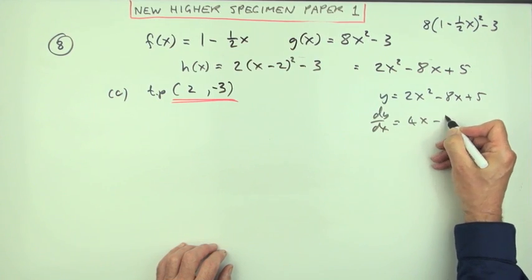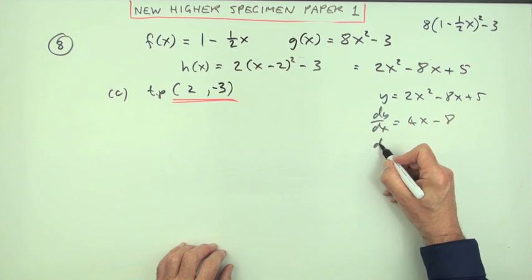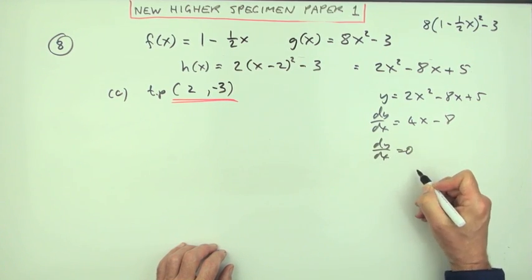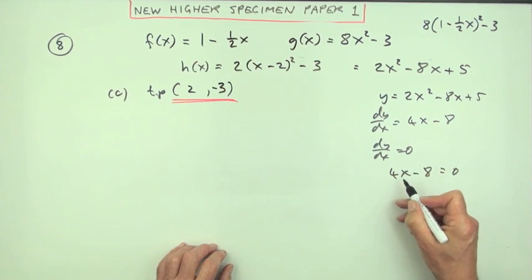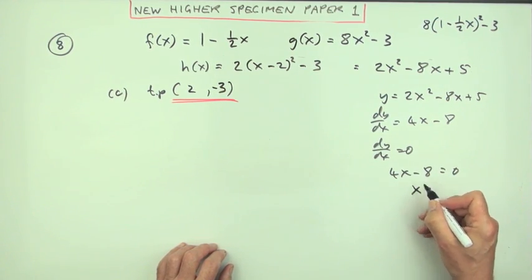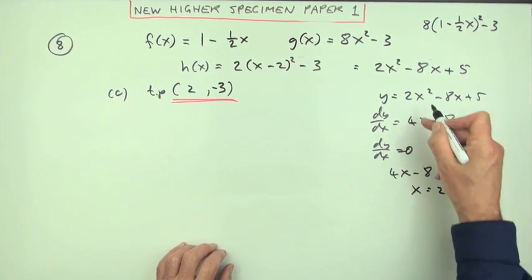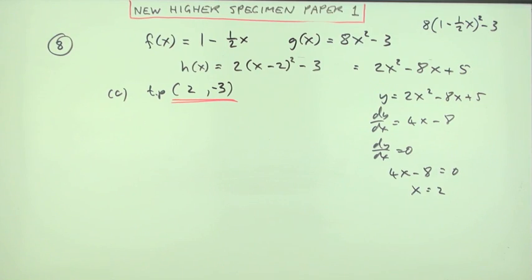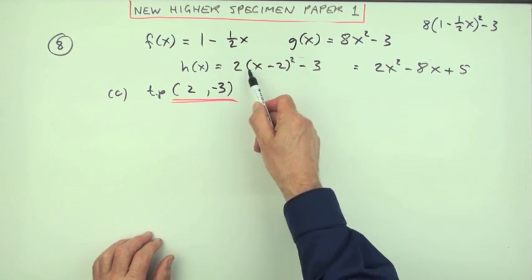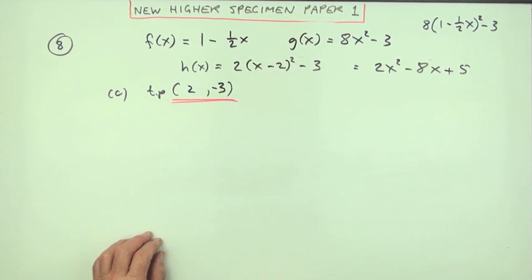The stationary point would be when dy/dx equals zero, so 4x - 8 equals zero, so 4x equals 8, so x equals 2. And then putting 2 back into that would give you the -3. Far too long. In this form here, you can spot it straight away by inspection.